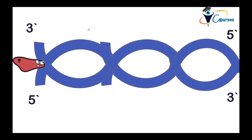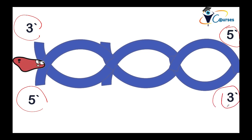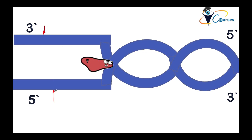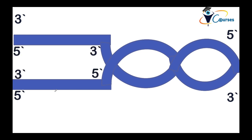Let's see this in action. We have the double-stranded DNA running from 3' to 5' on one strand and from 5' to 3' on the other — as we said, they are antiparallel. The first step is the helicase, which performs unwinding of the DNA, giving us two single-stranded DNA molecules.